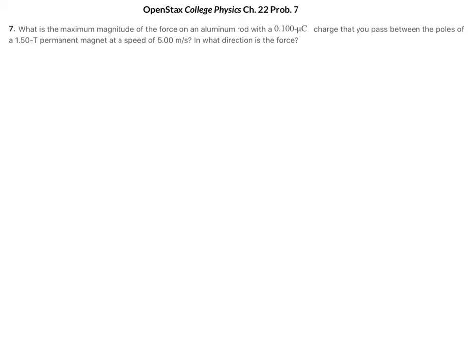What is the maximum magnitude of the force on an aluminum rod with a 0.1 microcoulomb charge that you pass between the poles of a 1.5 Tesla permanent magnet at a speed of 5 meters per second? In what direction is the force?